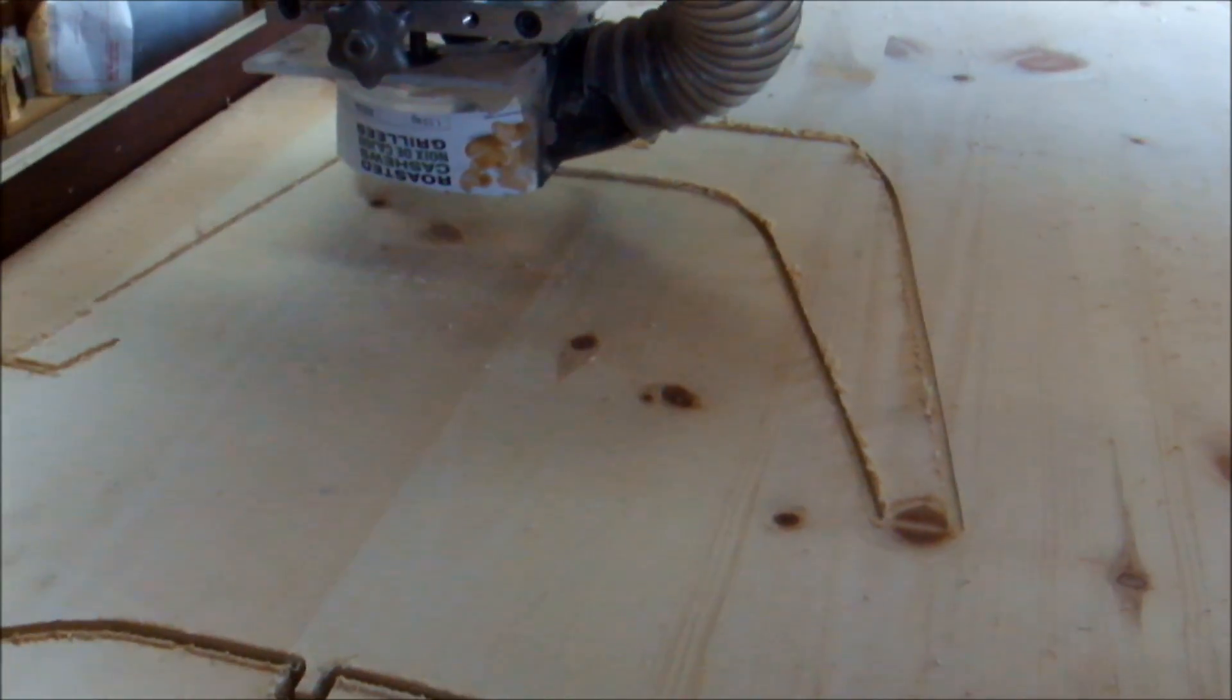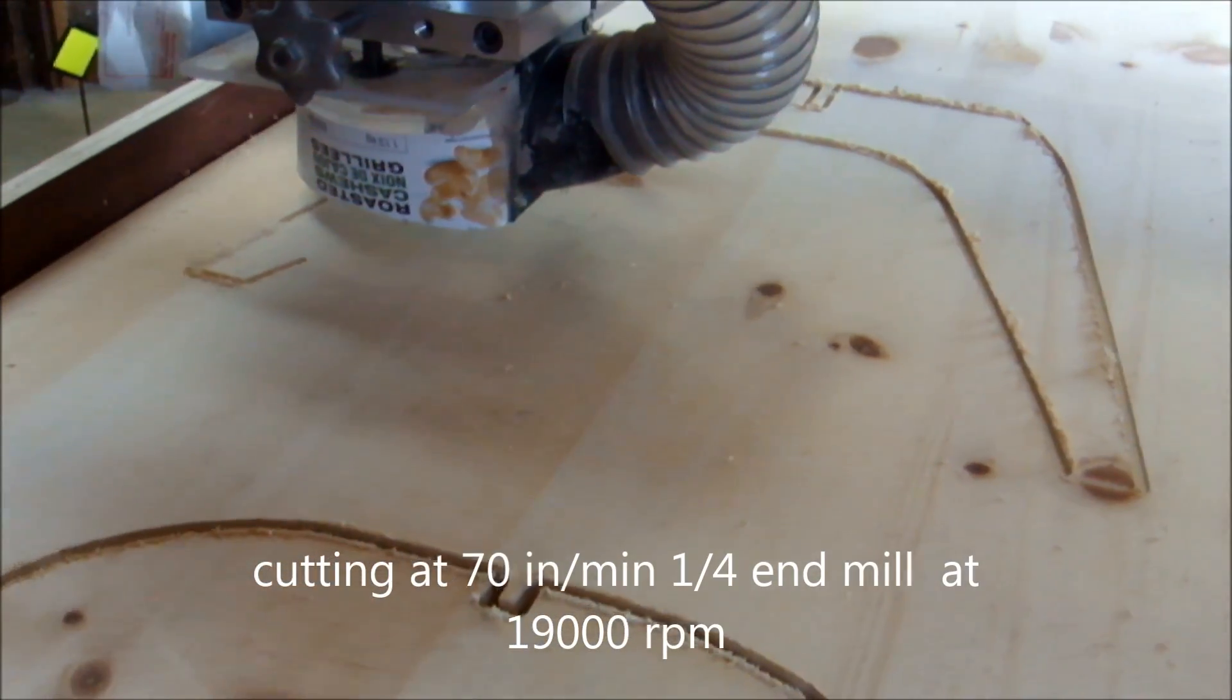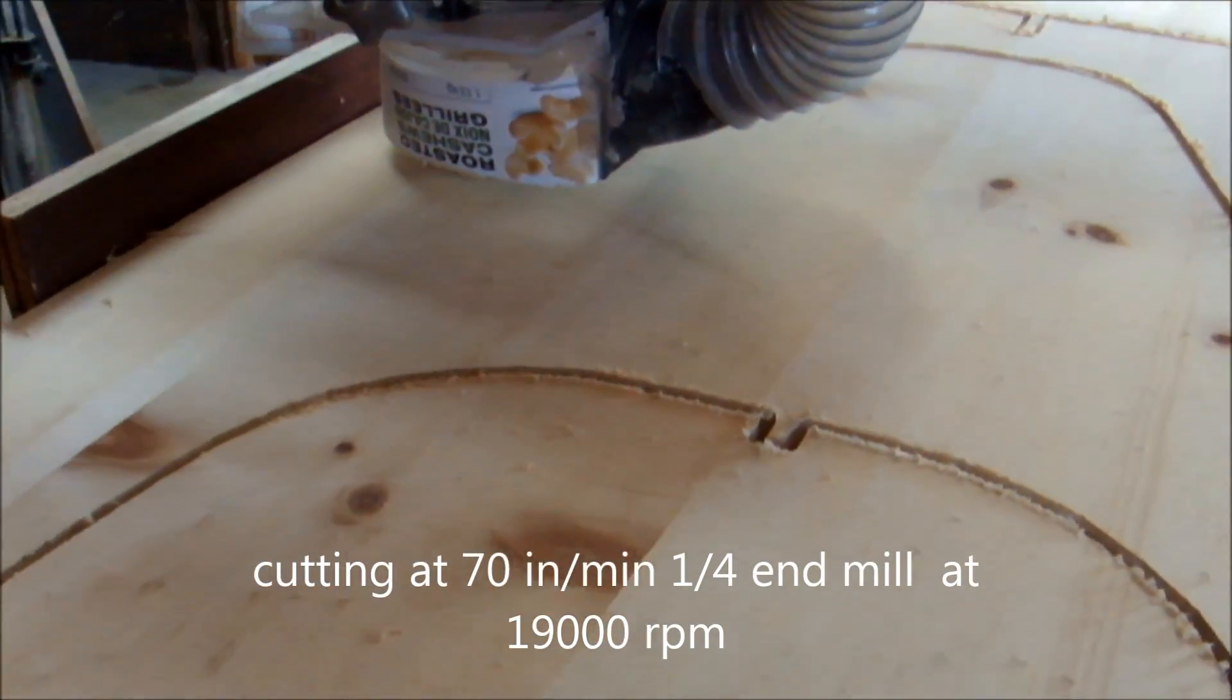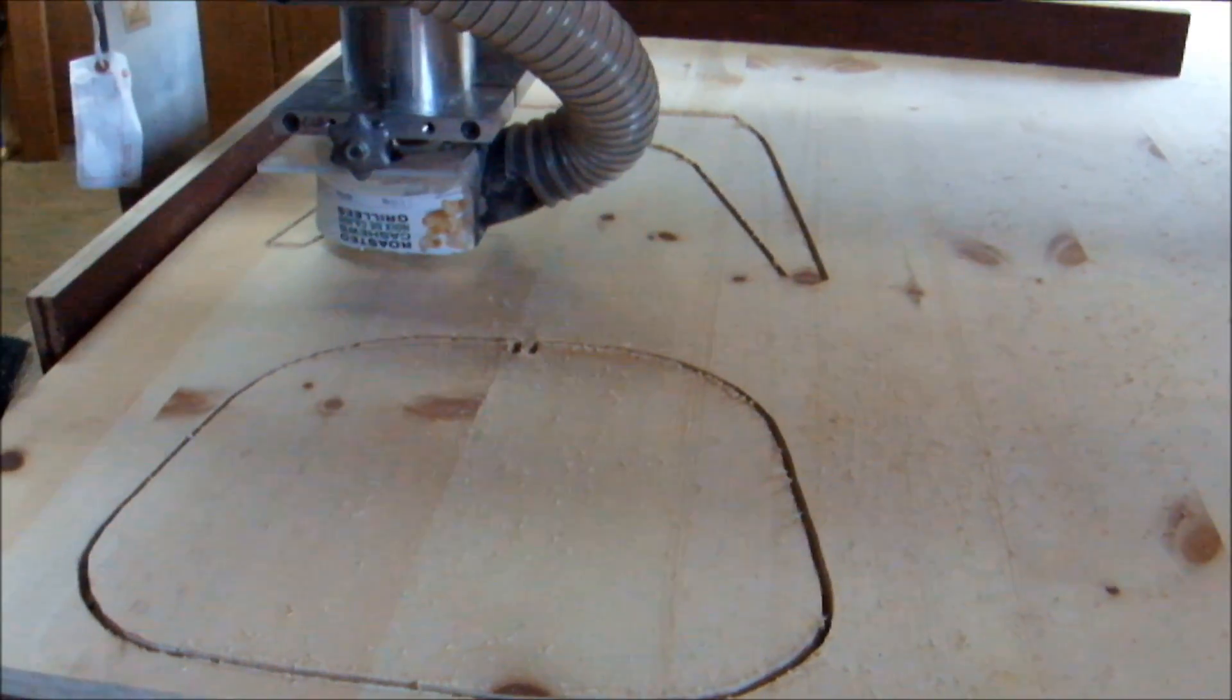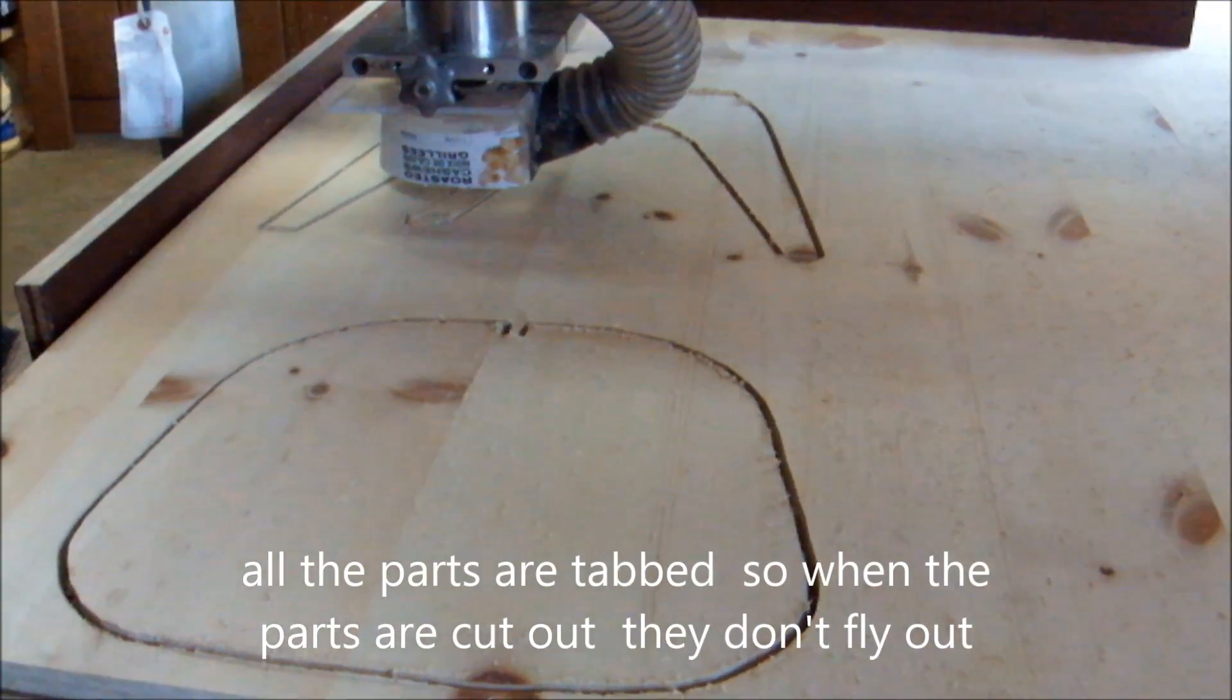Now we're ready for the CNC cut. As I've shown here I'm cutting about 70 inches per minute, which isn't really fast. I'm using a quarter inch end mill at about 19,000 RPM on the router.